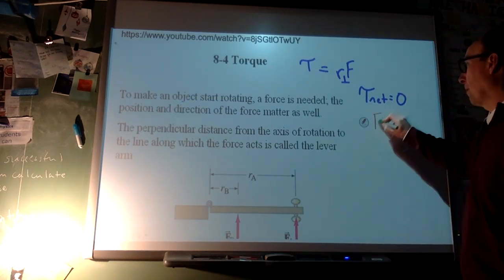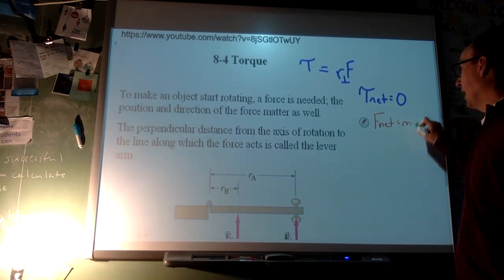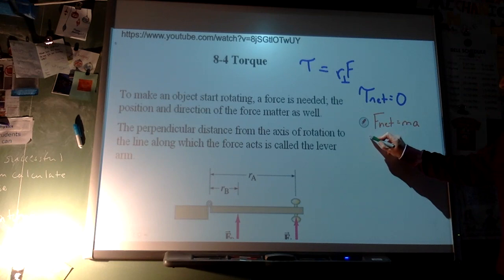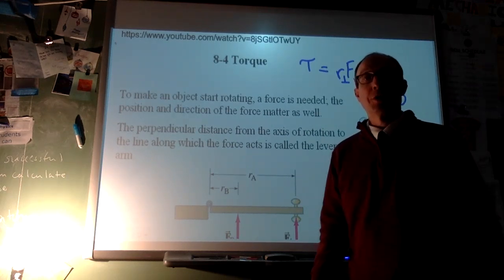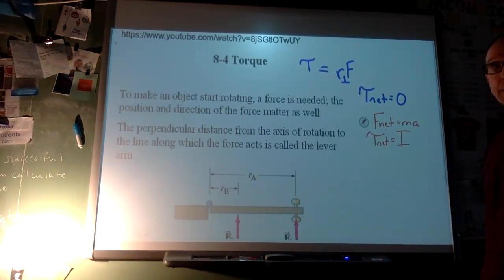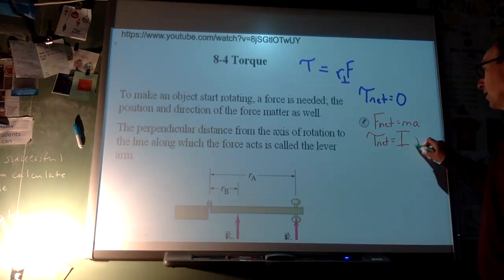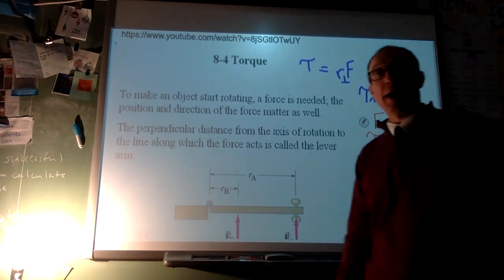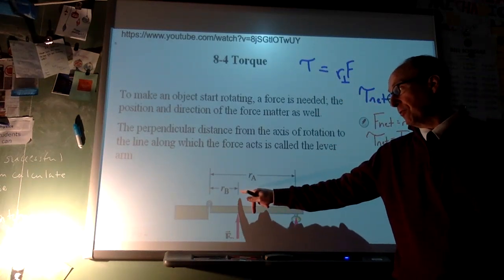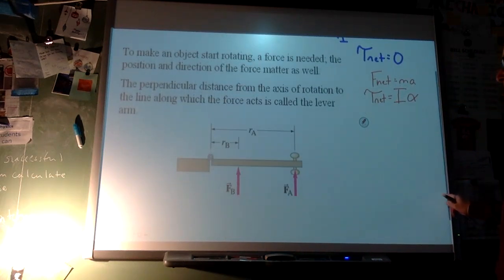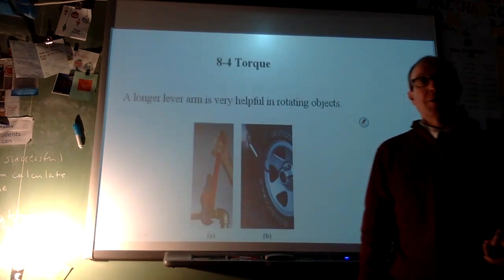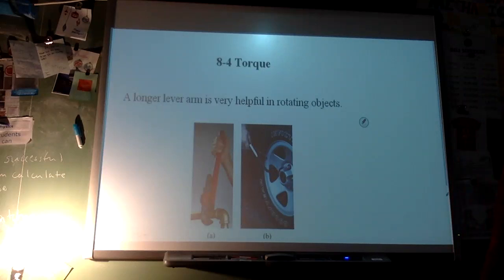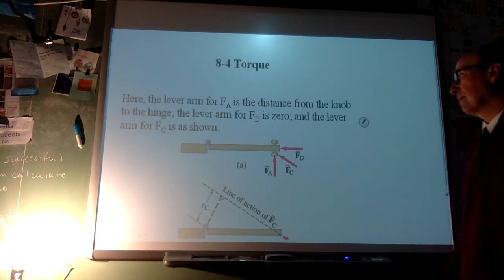Now we move to the second law. For translational motion it was F_net = ma. The rotational equivalent of force is torque, the rotational equivalent of mass is moment of inertia I — how hard it is to spin something — and the rotational acceleration is alpha. FA and FB are equal in force, but FA has more torque because it's farther from the pivot, so there's an advantage to a longer lever arm.